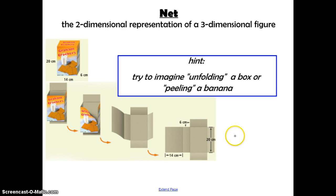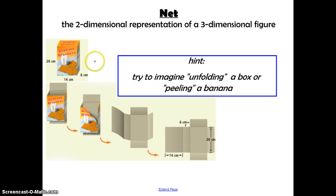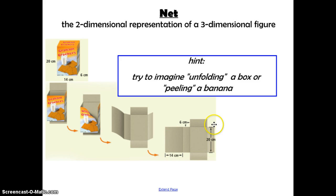A net is a two-dimensional representation of a three-dimensional figure. The best way to think about it is to imagine unfolding a box or peeling a banana. If we take a graham cracker box and slowly break it apart and peel it open until it lays completely flat, the pattern we see is called a net. Every three-dimensional figure has a net, except for the sphere.